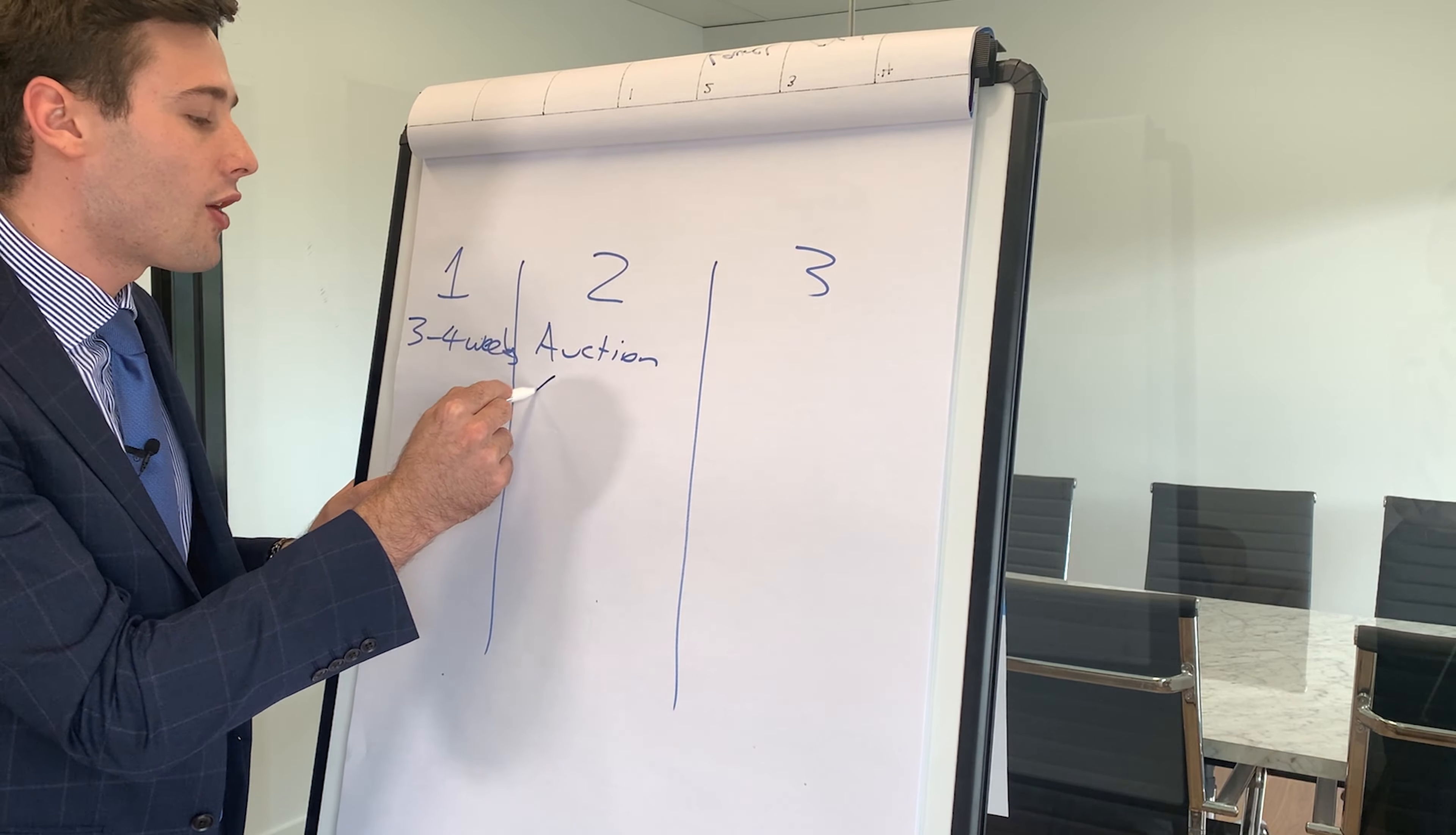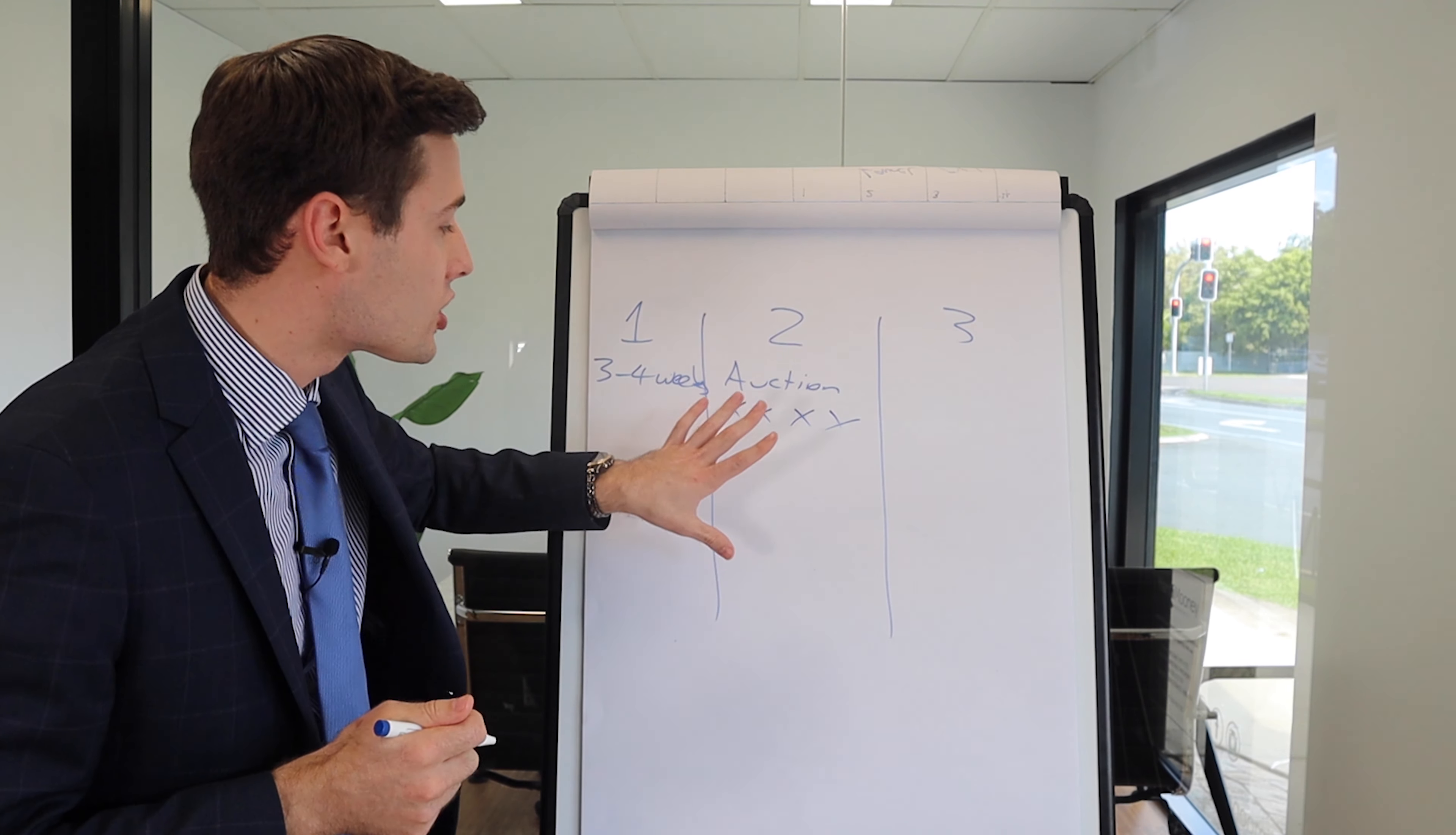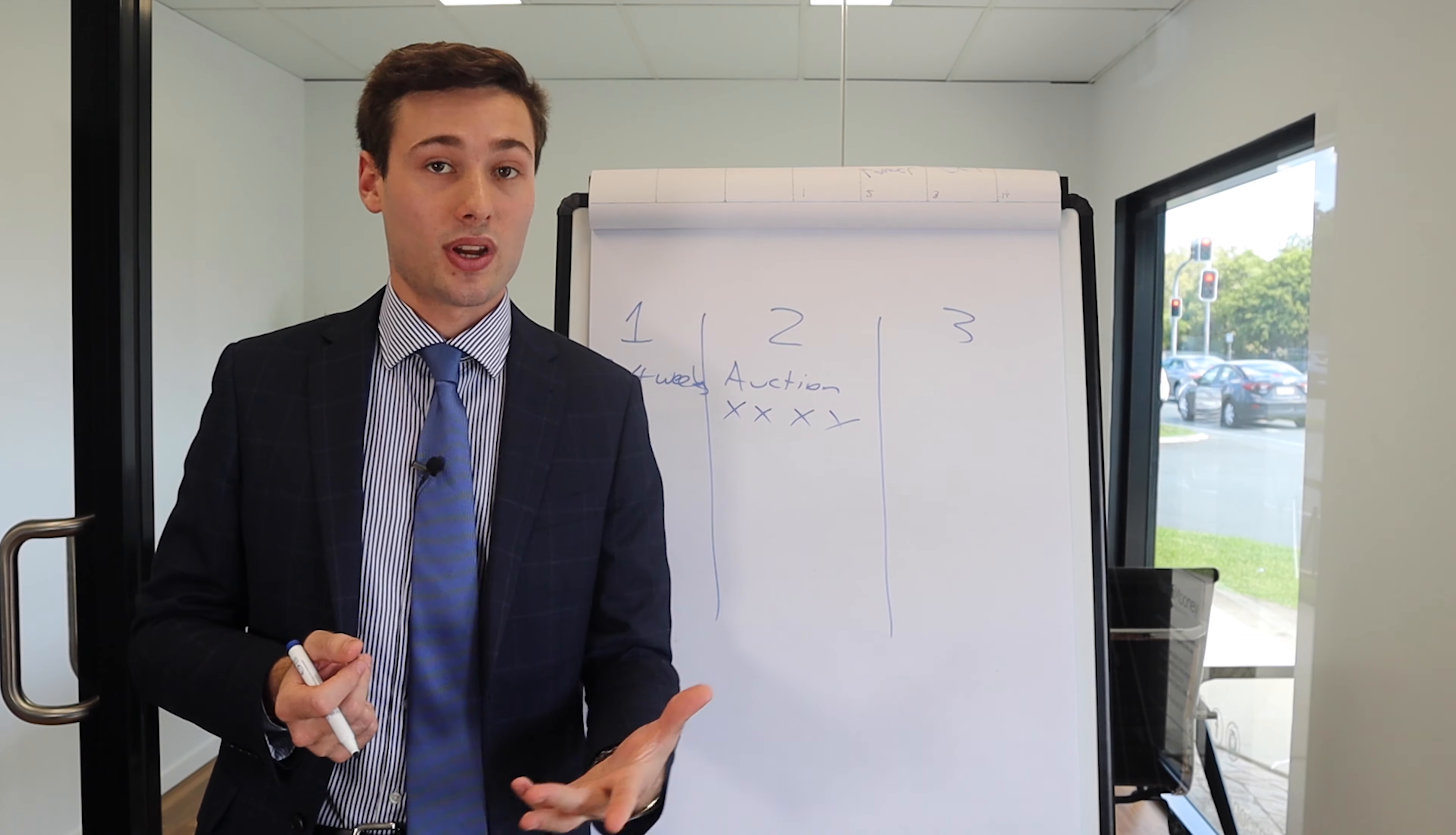Stage two is the auction itself, where we have multiple bidders bidding against each other to push that price upwards. So at the moment we're seeing record number of registered bidders, buyers getting involved in the auction process. Another benefit of this method of sale is we don't need to put a price on it from the start.